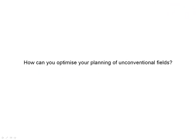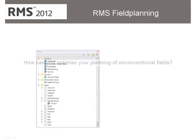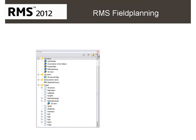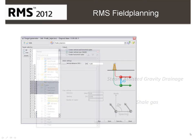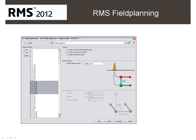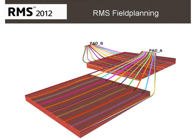How can you optimize your planning of unconventional fields? RMS 2012's new field planning suite of tools significantly shortens time spent planning unconventional assets, measurably reducing the planning iterations between geoscientists and drilling engineers. Import and export multiple targets or create multiple copies of a target input with the target generator tool. Maximum efficiency with minimum effort. Not only is the field planning module precise,